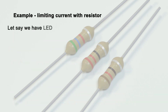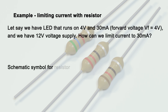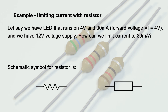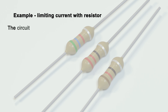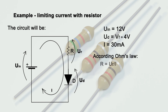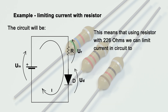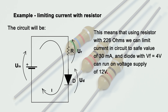Example: limiting current with a resistor. Let's say we have an LED that runs on 4 volts and 30 milliamperes, with forward voltage VF equals 4 volts, and we have a 12 volt supply. Using a resistor with 266 ohms we can limit the current in the circuit to a safe value of 30 milliamperes, so a diode with VF equals 4 volts can run on a voltage supply of 12 volts.